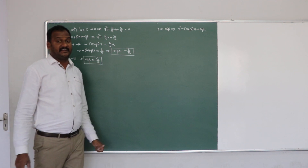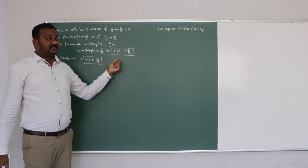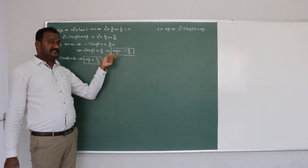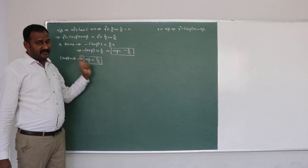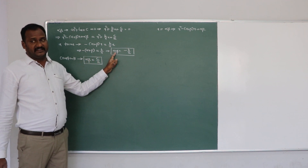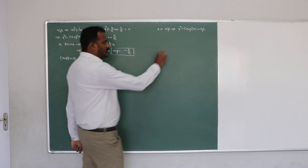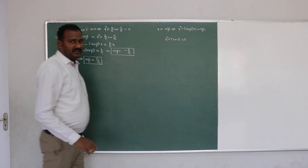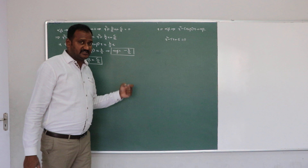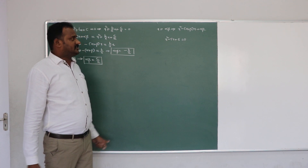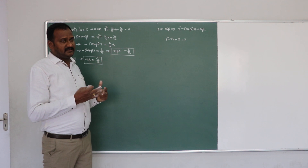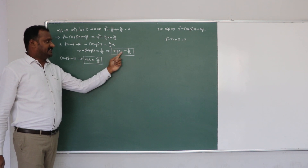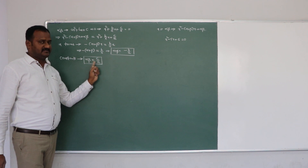What is the purpose of finding alpha plus beta and alpha times beta? Without actually finding the zeros of the polynomial, we can easily figure out the sum and product. For example, one problem is given: x squared minus 5x plus 6 equals zero. Is it possible to find the sum and product of zeros without actually finding the zeros? Yes, we can — using alpha plus beta equals minus b/a and alpha times beta equals c/a.